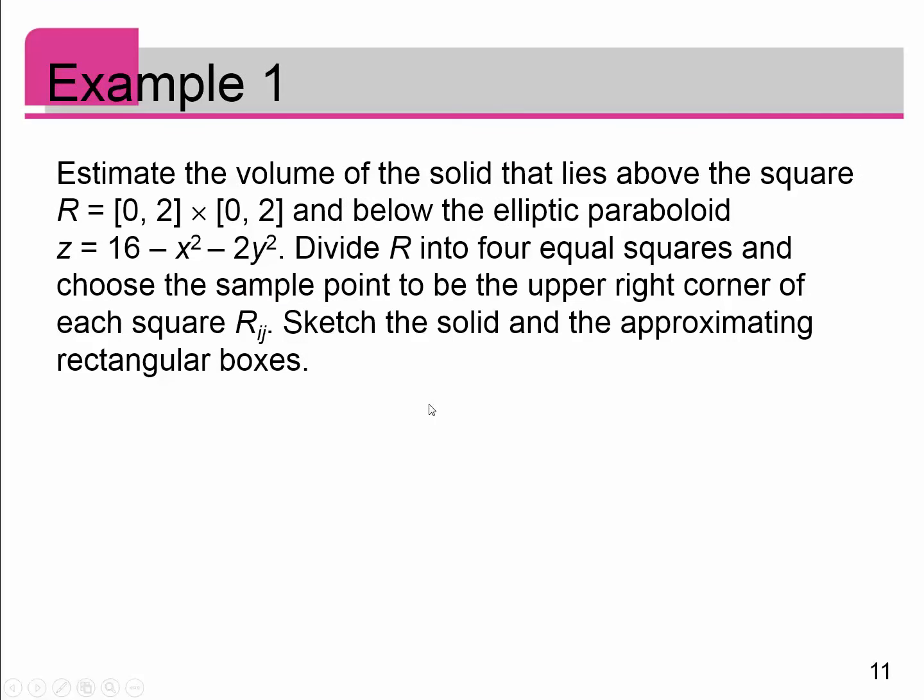Let's do an example where we don't actually take the integral, but we approximate it by doing some Riemann sums. We want to estimate the volume of a solid that lies above the square [0, 2] × [0, 2]. If I were to draw a picture of that, here's 2, here's 2. I'm going to do a rectangle here, and I want to do it for the surface z equals 16 minus x squared minus 2y squared. If you graph this surface, it is actually an elliptic paraboloid. They tell us to divide R into four equal squares and choose the sample point in each sub-rectangle to be the upper right corner.